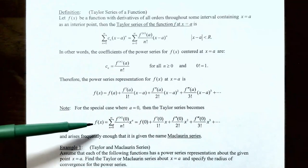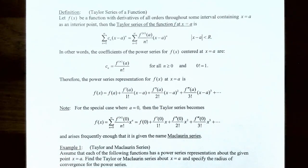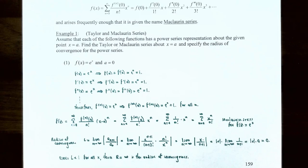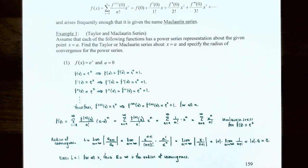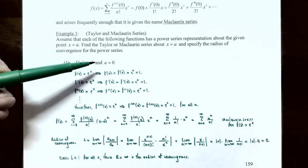The series where a equals zero arises frequently enough that it's given its own name: a Maclaurin series. Let's look at Example 1: find the Taylor or Maclaurin series for the function f(x) = e^x about x=0, and specify the radius of convergence.